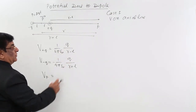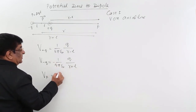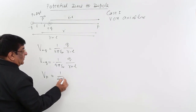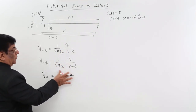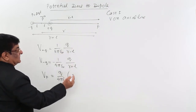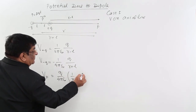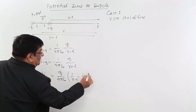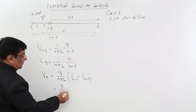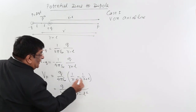When we add the two, it will not be zero because one denominator is R − L and the other is R + L. Taking out the common factor (1/4πε₀) and Q, what we get inside the bracket is 1/(R − L) − 1/(R + L), which equals Q/(4πε₀) multiplied by (R² − L²) in the denominator.